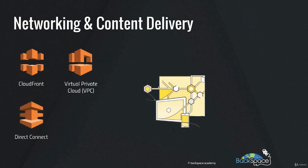AWS Direct Connect is a high-speed dedicated network connection to AWS. Enterprises can use it to establish a private connection to the AWS cloud in situations where a standard internet connection won't be adequate.